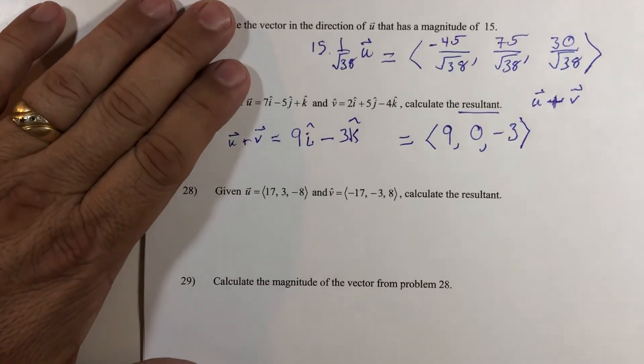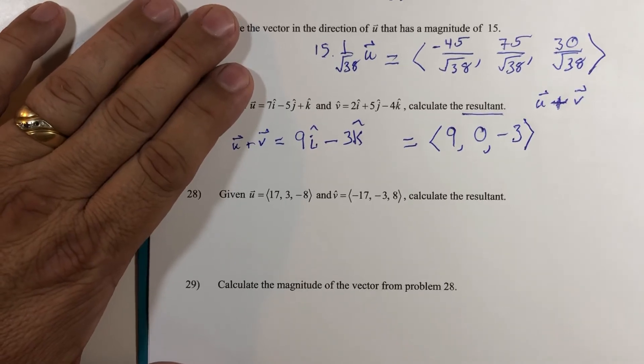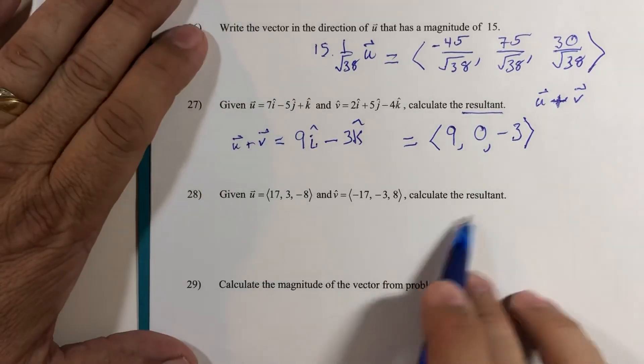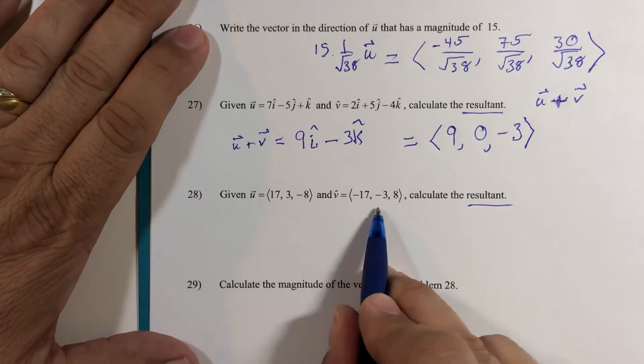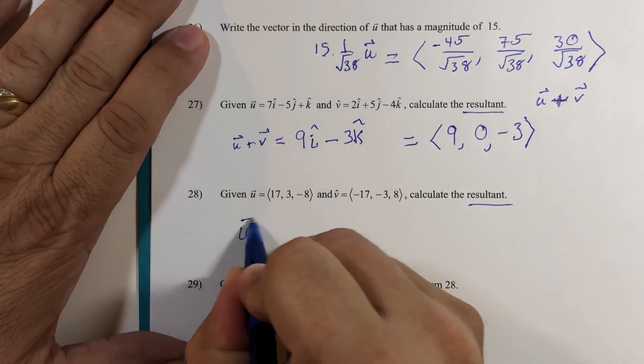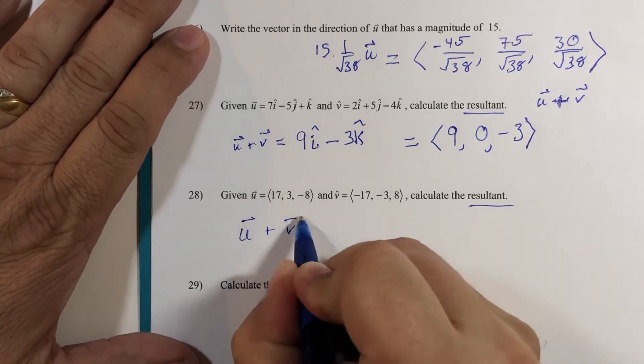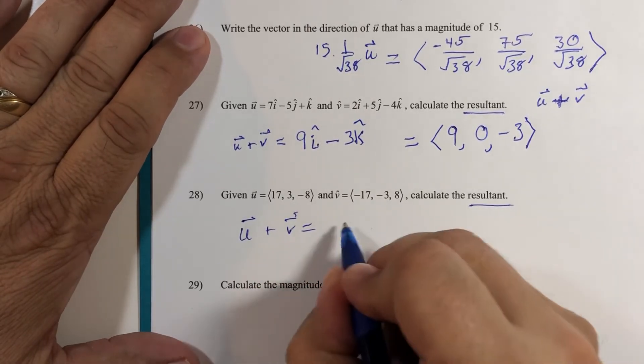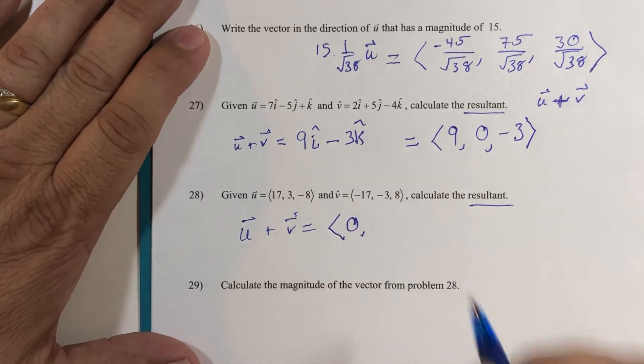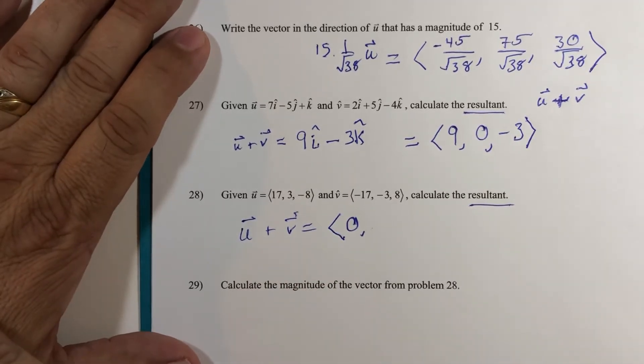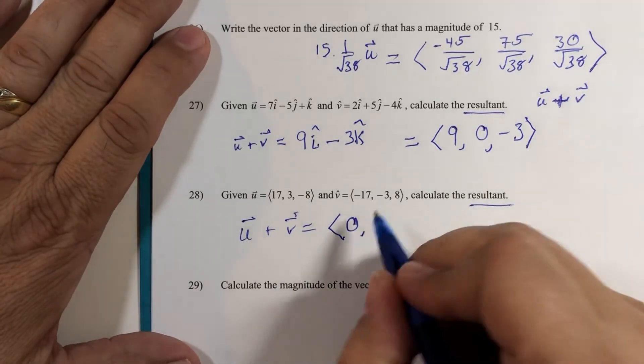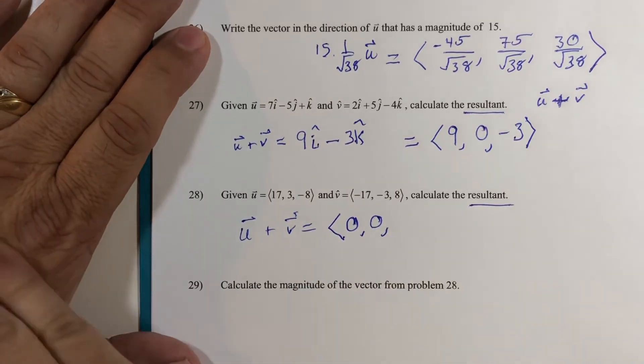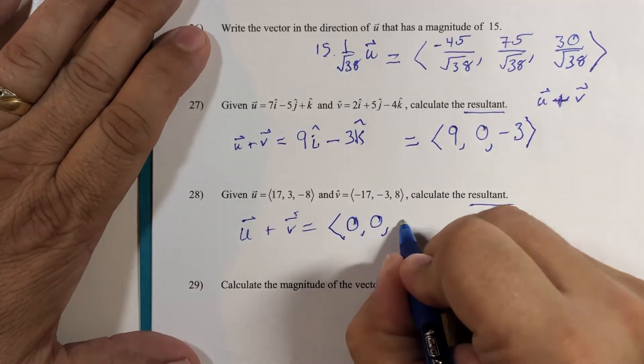All right, we're almost there. One more resultant. Let's just add these two vectors together: u plus v equals 17 minus 17, would be - I'm going to go straight to component form - 0, 3 minus 3, that would be 0 again, and -8 and 8 would be 0 again.